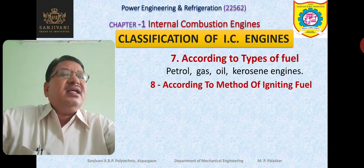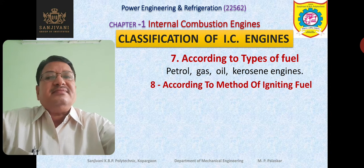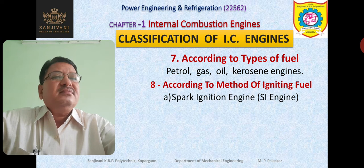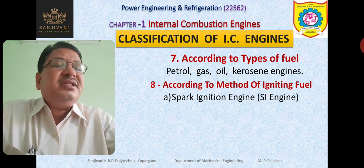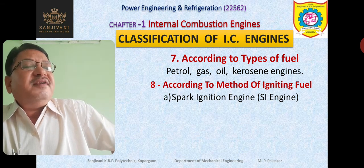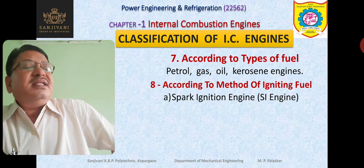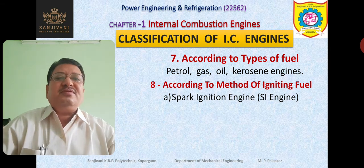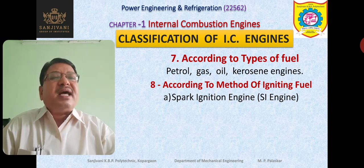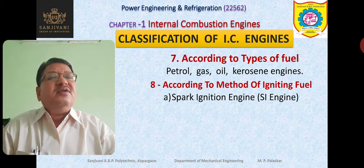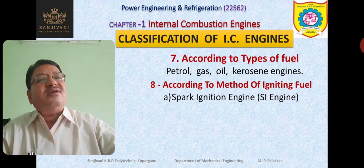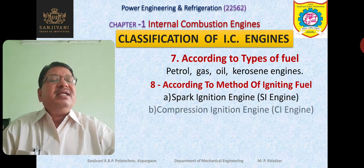According to the method of igniting fuel, the fuel can be ignited by producing a spark, and such engines are called spark ignition engines, or SI engines. In an SI engine, a mixture of air and fuel is compressed in the cylinder, and then a spark is produced. Due to the spark, a sudden explosion takes place and combustion of the fuel occurs — the ignition of the fuel takes place because of the spark.